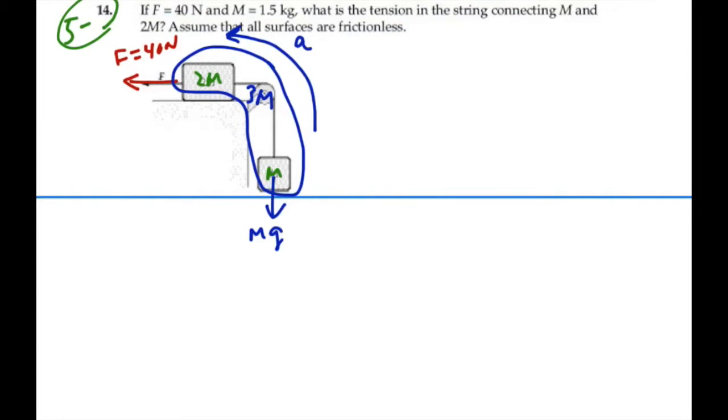So the total mass of this blob is going to be 3M. If we were to write Newton's second law for the motion of this blob, we would say the summation of the forces in the positive acceleration direction is equal to the total mass times acceleration, and that's equal to the net force in the direction of acceleration, which is going to be F minus Mg. Now the total mass is 3M, so we're going to have 3M times A is equal to F minus Mg. So A is going to equal F minus Mg divided by 3M.